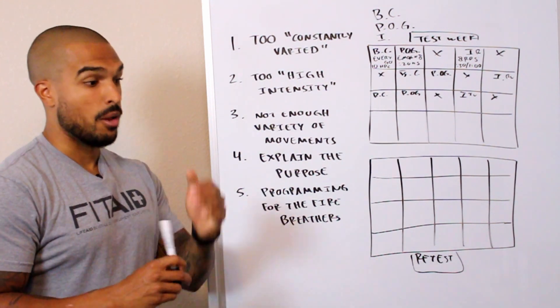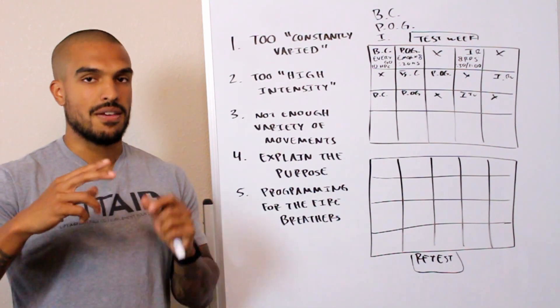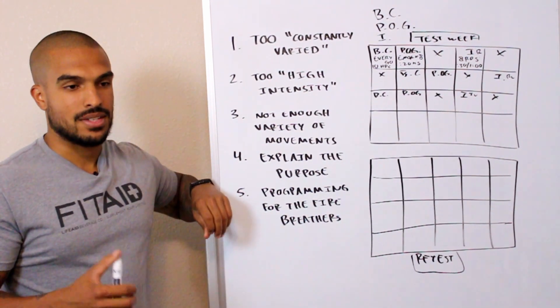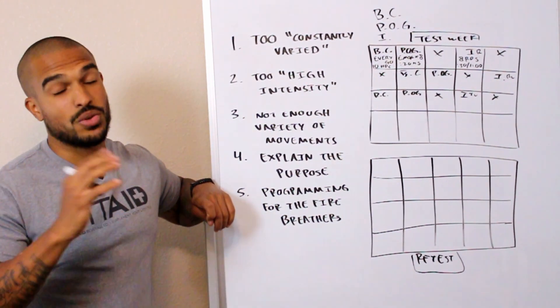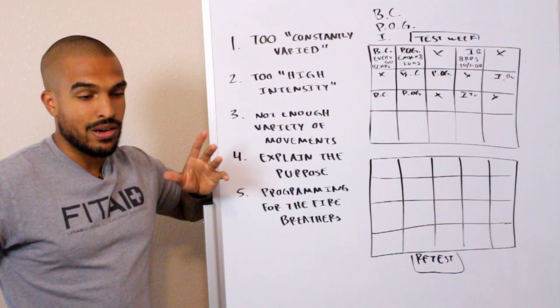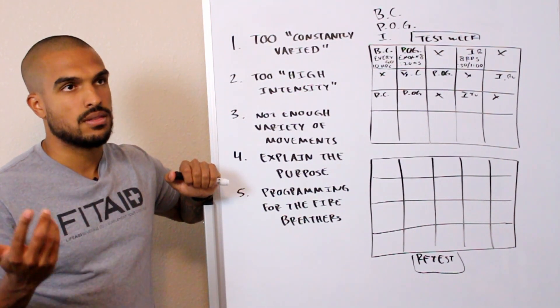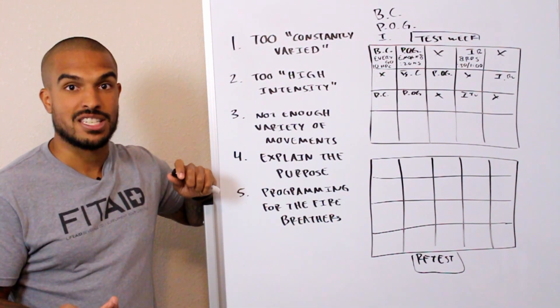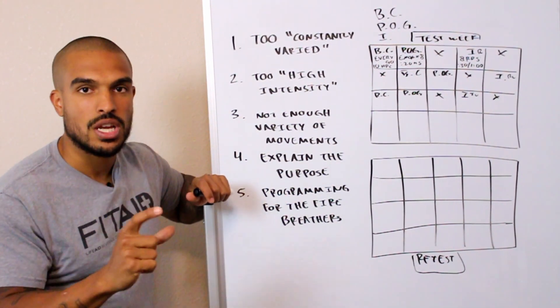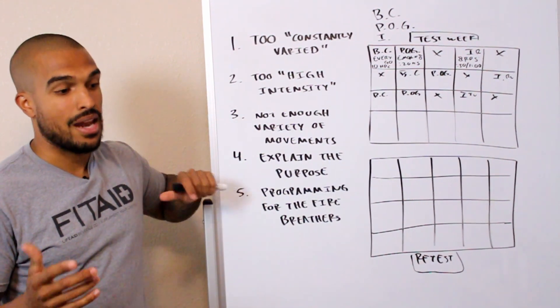You need to program for the general population and then you can program up for everyone else as well. It's much easier to program a very simple workout - simple in the sense of maybe it does have snatches, maybe it does have muscle ups every now and then, but for the most part it's a workout that a lot of your members can do. And then from there, modify up. RX plus today: muscle ups instead of pull ups. RX plus today: squat snatches instead of power snatches. That being said, I also do a level three, so essentially some days I'll post three different levels of a workout.